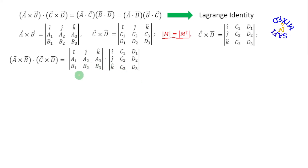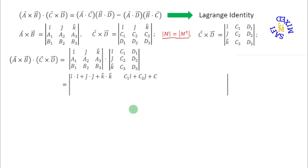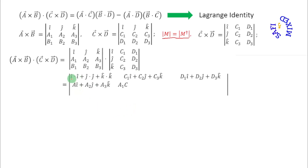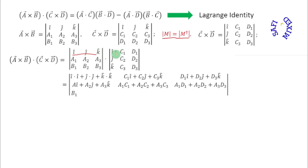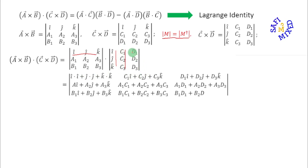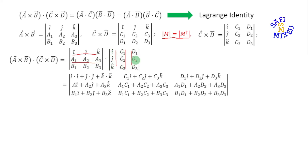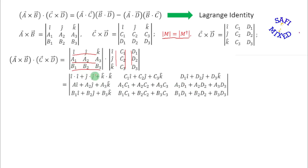Using the procedure for matrix multiplication, I can put this product into a single determinant form. I obtain the first row by multiplying the first row with each column to get each element. I repeat this for the second row and the third row, multiplying each in turn with every column to obtain all elements.